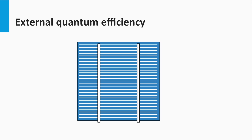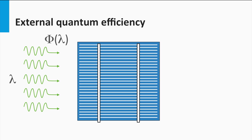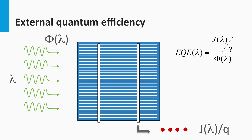For that we introduce the external quantum efficiency. Here we see a solar cell. Let's consider a certain amount of photons at a certain wavelength which are incident on the solar cell. These photons will generate electrons collected at the terminals. The external quantum efficiency is the number of electrons collected at the terminals per incoming photon at a certain wavelength.